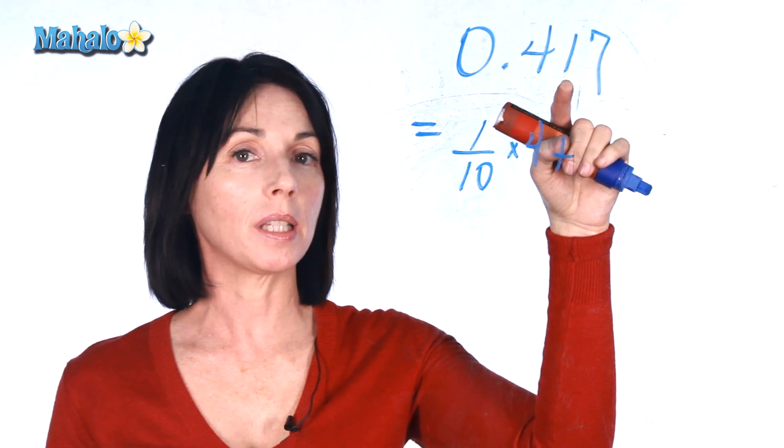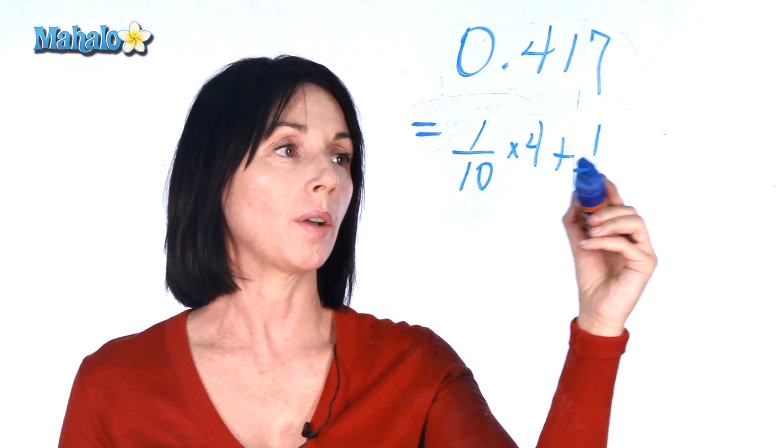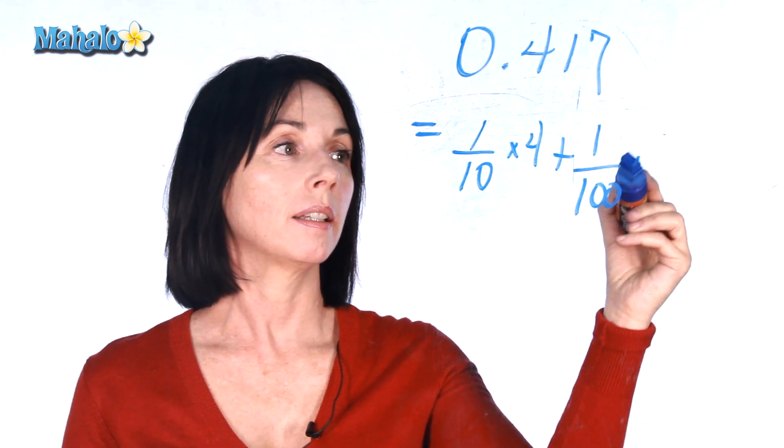And then in this position, the hundredths position, we're actually dividing by 100. So we have 1 over 100 times 1.